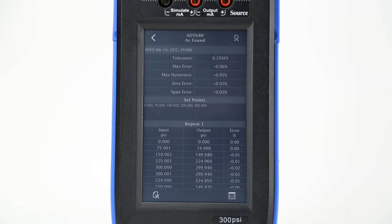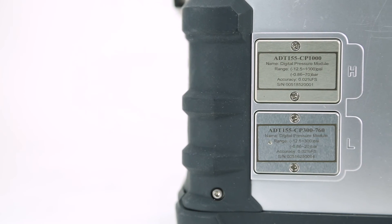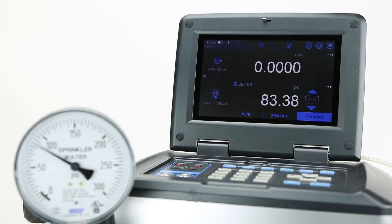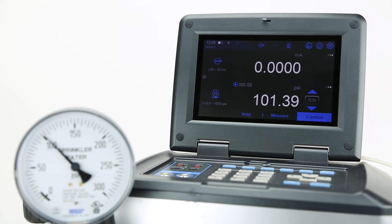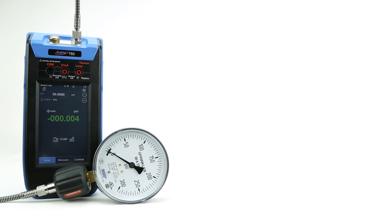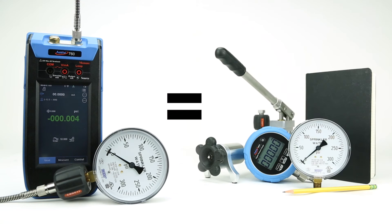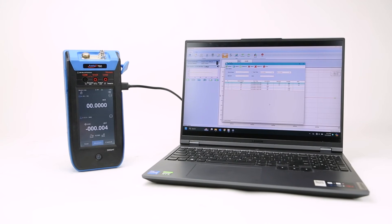Some automatic calibrators also have reference modules installed and even generate their own pressure, thus simplifying and optimizing field calibrations. This way, one automatic calibrator can replace a pressure pump, reference gauge, and data logging equipment.